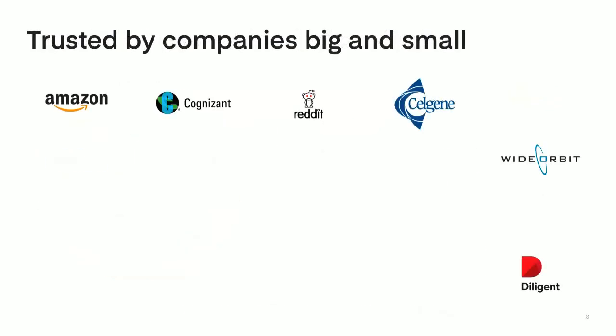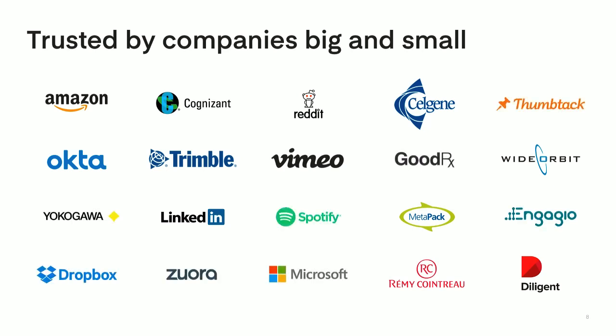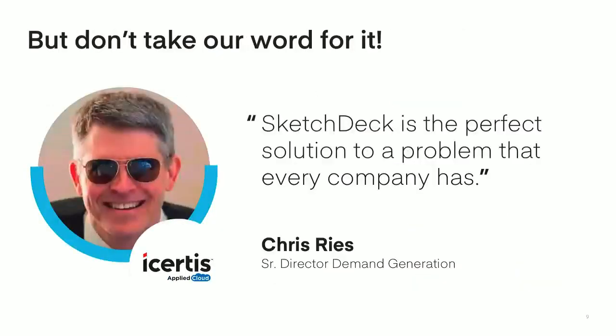Our clients range from startups for which we support a handful of people, to Fortune 500 companies where we support the day-to-day operations of entire business units. The bottom line is we do good work. For example, Chris runs demand generation for a company with about 500 people based in Bellevue, Washington. I'd like to move on to the report itself — just let me know if you have any questions about our company at any point.